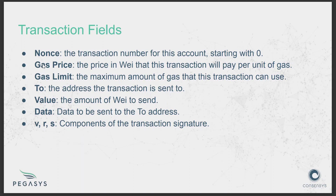The 'to' field is the address you are sending the transaction to — for example, a DEX contract address if you're doing a swap. The 'value' field is the amount of native ETH you are sending. The 'data' field: if you're sending to an externally owned account (EOA), the data field is typically empty. But if you're calling a smart contract, the data field contains the function being called and its arguments.